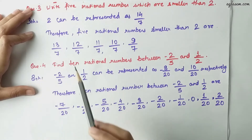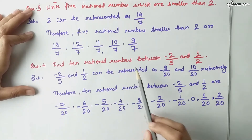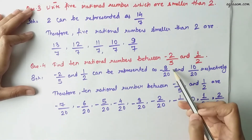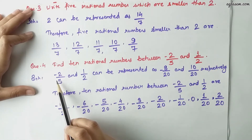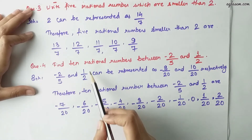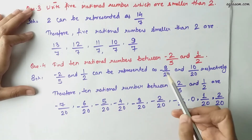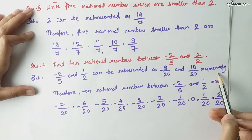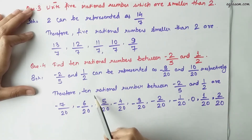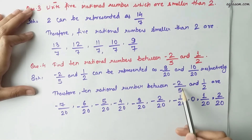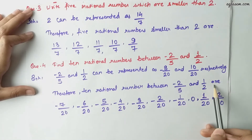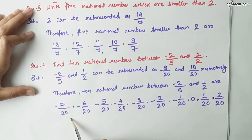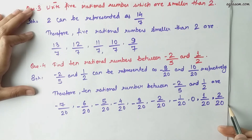Moving to the fourth question: find 10 rational numbers between minus 2 by 5 and 1 by 2. Minus 2 by 5 and 1 by 2 can be represented as minus 8 by 20 and 10 by 20 respectively. Therefore, 10 rational numbers between them are minus 7 by 20, minus 6 by 20, minus 5 by 20, and so on up to 2 by 20.